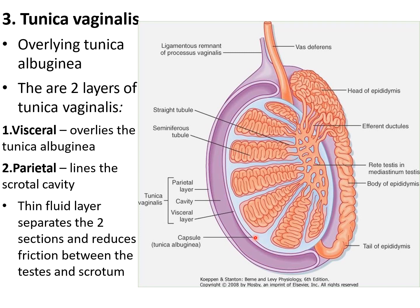Close to tunica albuginea there is the visceral layer of tunica vaginalis, then a cavity, then the parietal layer of tunica vaginalis close to the scrotal cavity. The parietal layer, cavity, and visceral layer together we call the tunica vaginalis. There is fluid in the cavity that reduces friction between the scrotum and the testis.